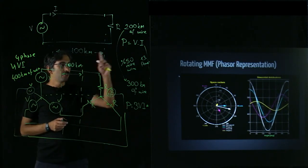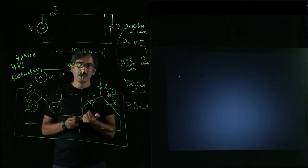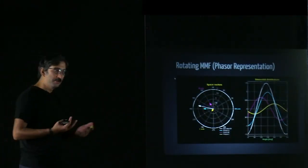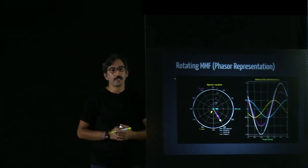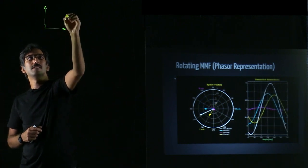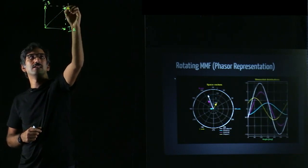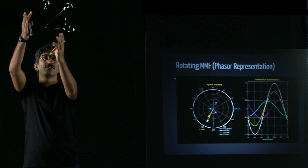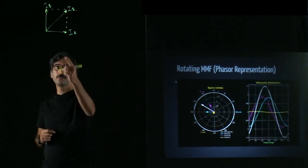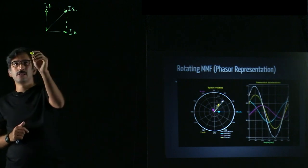Careful watchers might ask: can I generate a rotating MMF with a two-phase system? The answer is yes — if you have two vectors and change their magnitudes appropriately, the resultant vector can rotate. To achieve this, the two voltage source phasors need to be 90 degrees apart from each other.